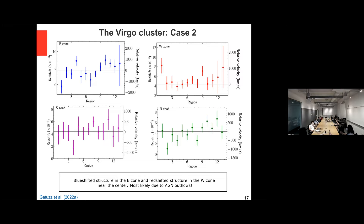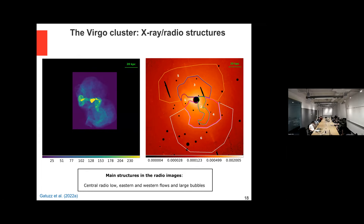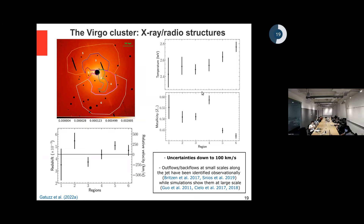We also have radio data for this cluster — really beautiful, showing lobes, outflows, and bubbles with a lot of structure. We extracted spectra from different regions following the radio morphology to measure velocities. Regions one and two, which follow the AGN outflow direction, show large velocity differences — we are looking for signatures of AGN outflows there. In some regions, for example region three, we found velocity uncertainties down to 100 km/s, which is great for this method.